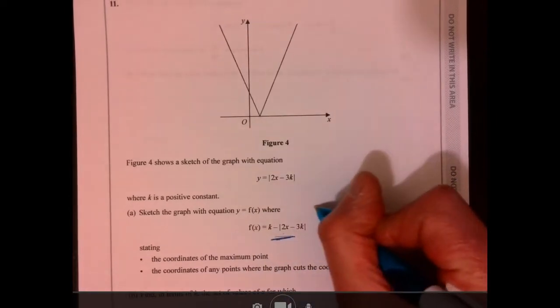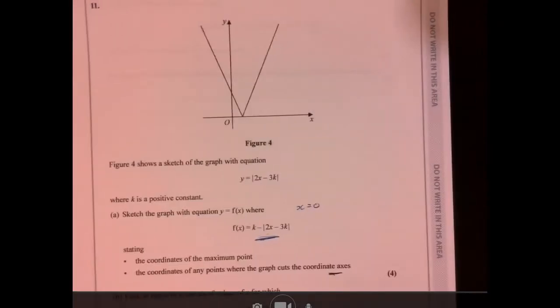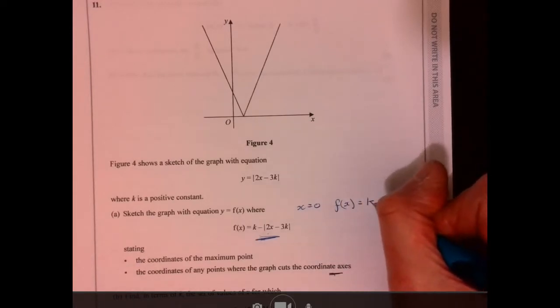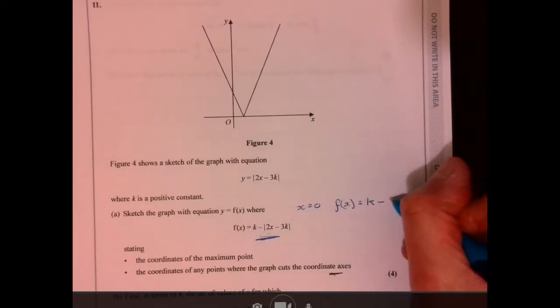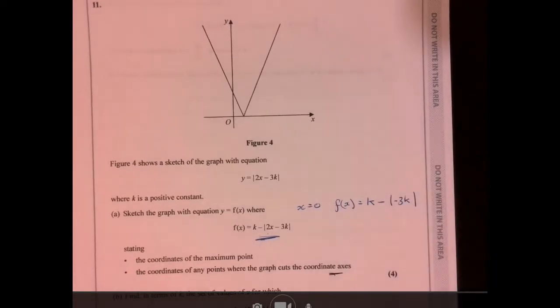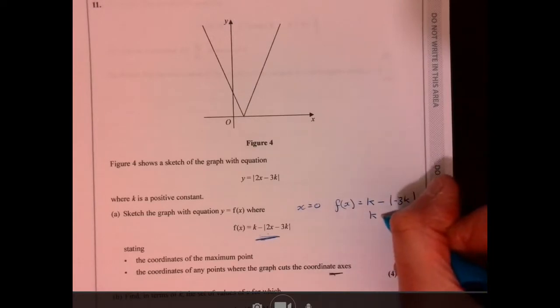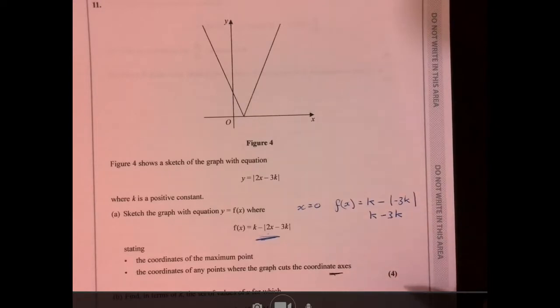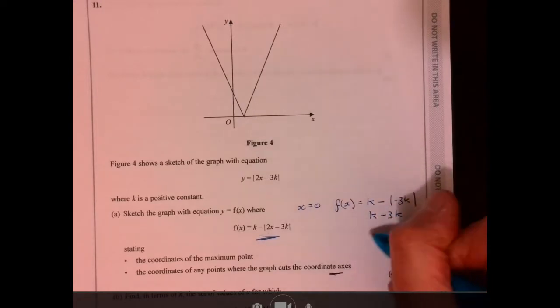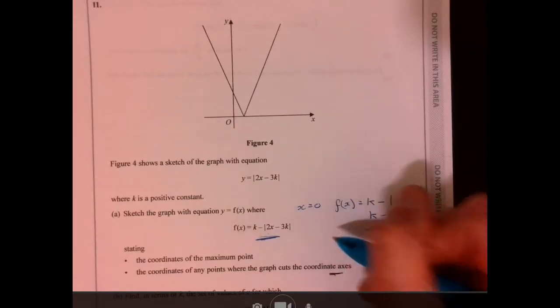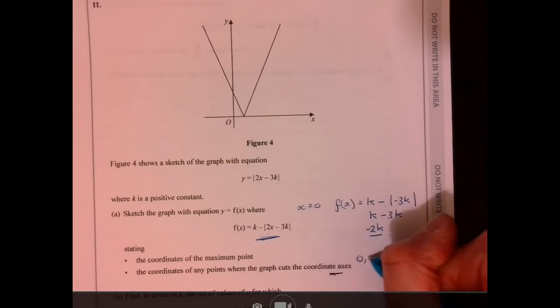What's that going to give us? So let's say x is 0. That's going to give us k minus modulus minus 3k. So k and then that's take away 3k. Effectively, you have to pull all the brackets there. So that's going to equal minus 2k. So there's one point. So we've got 0 minus 2k.